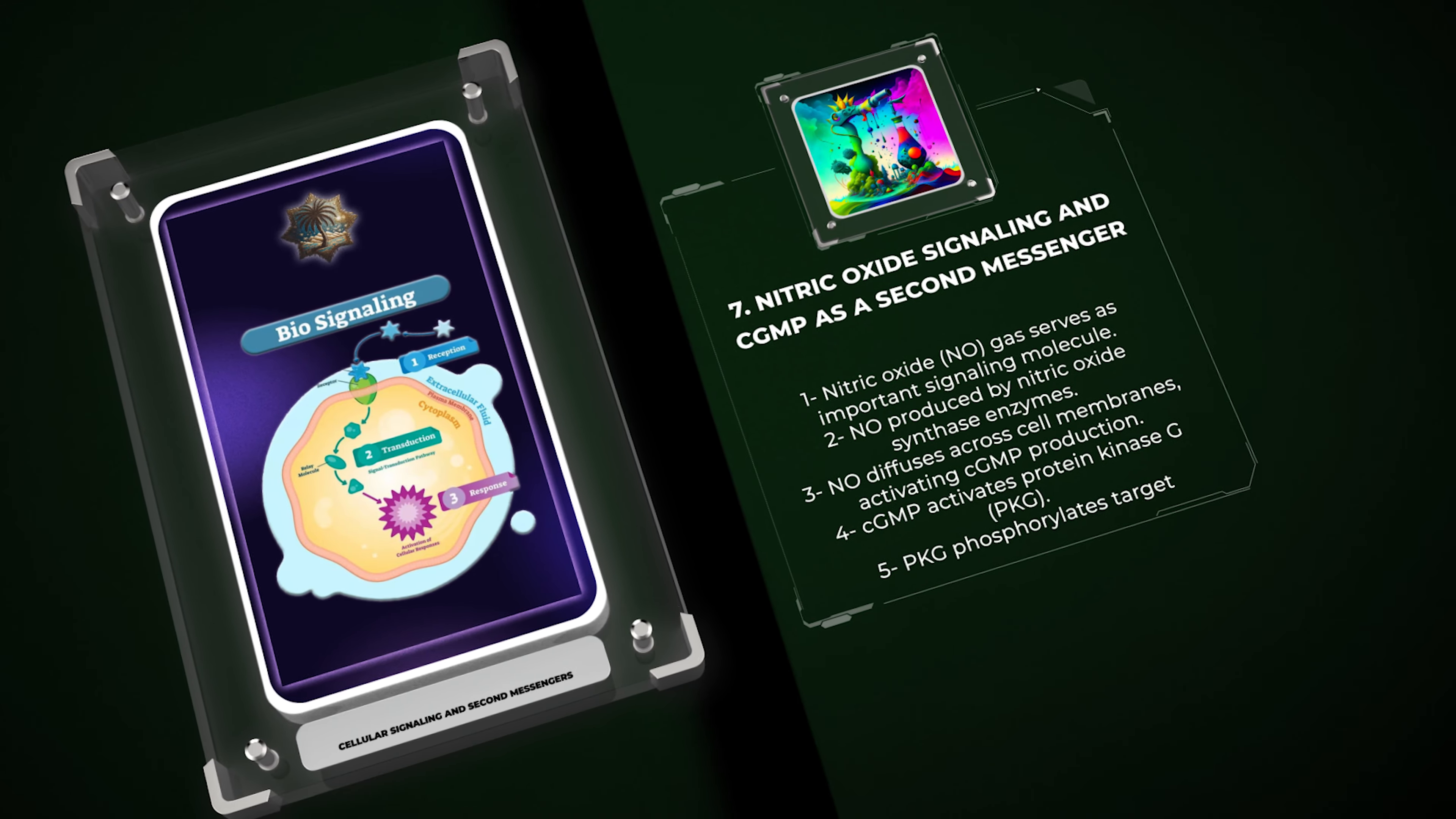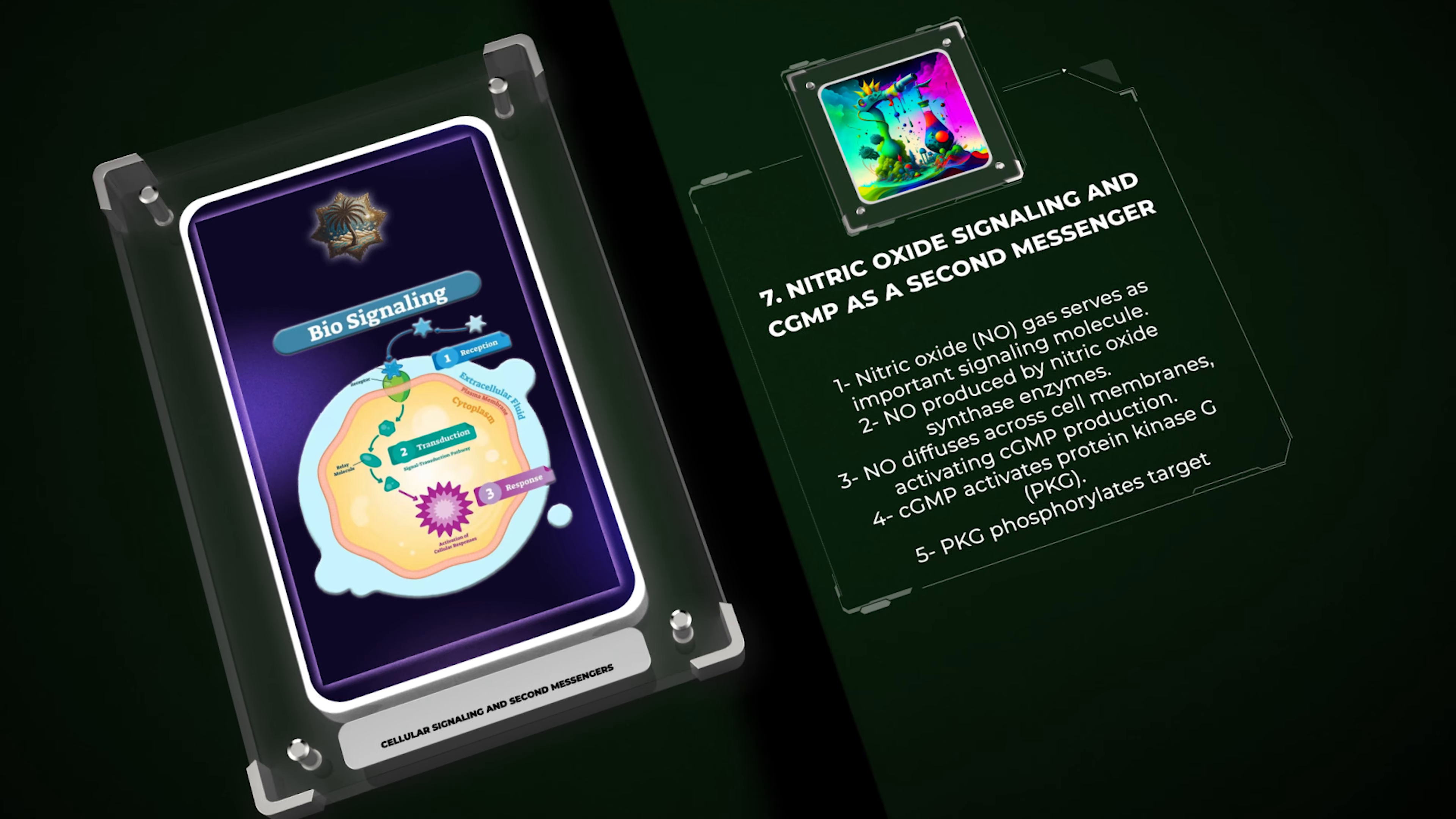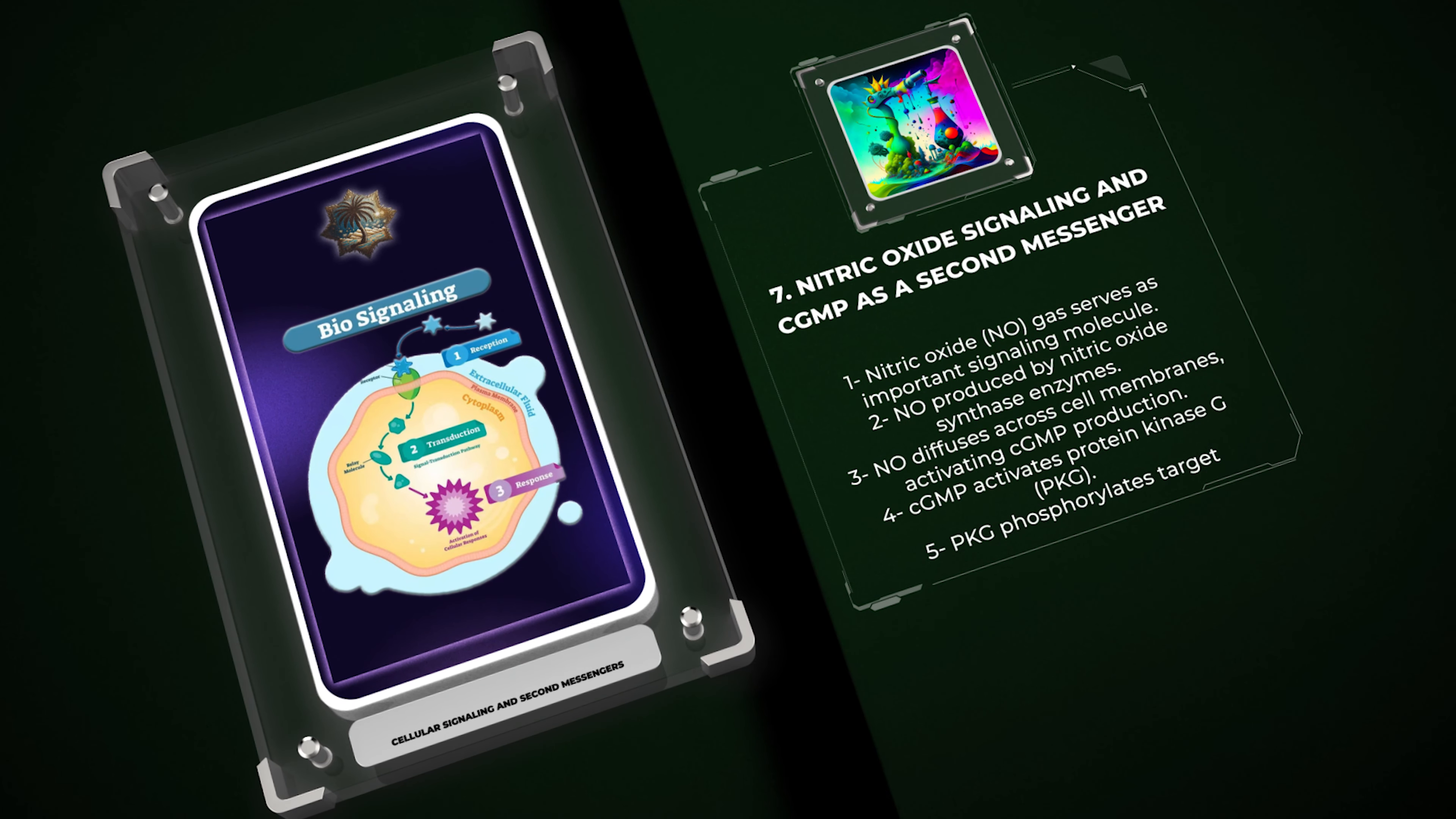cGMP then activates protein kinase G, PKG, which phosphorylates a wide range of target proteins, leading to vasodilation, neurotransmission, and other cellular responses.